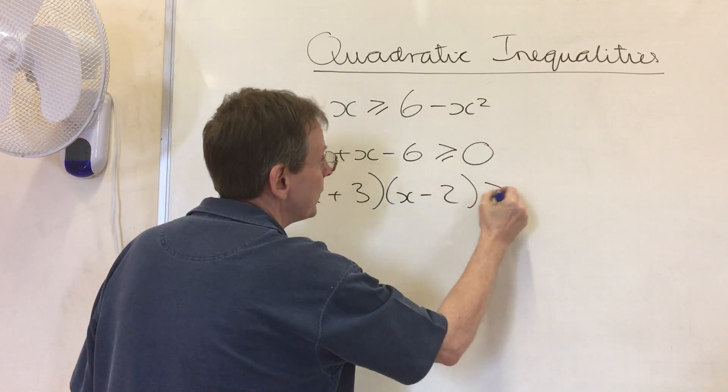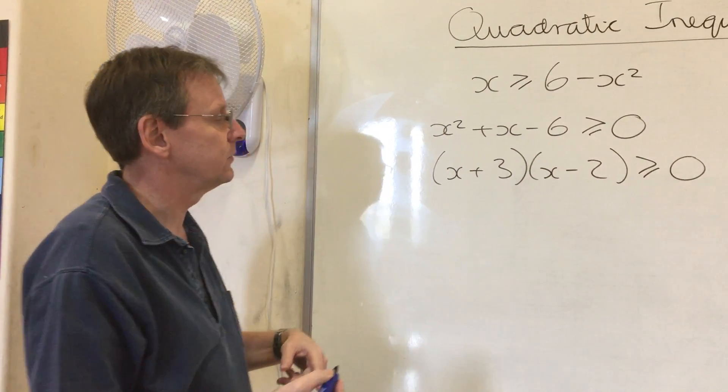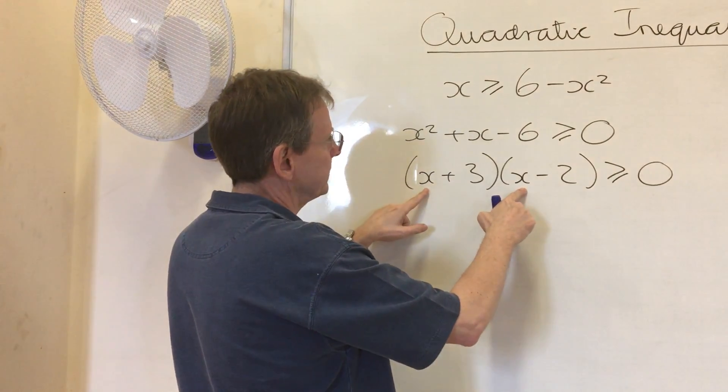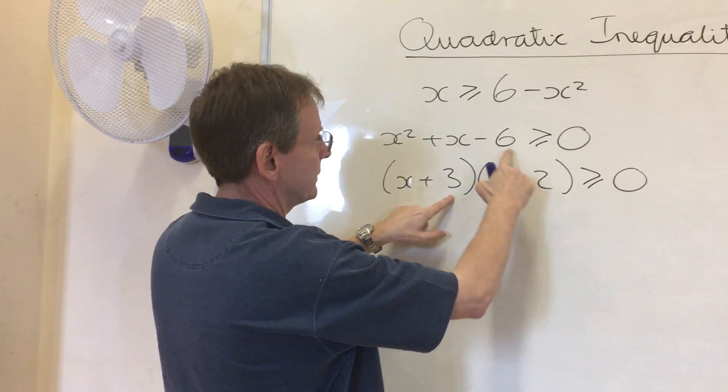But of course remember that whenever you factorise, always multiply out to make sure that you do get the expression that you just factorised. And x squared minus 2x plus 3x is x minus 6.